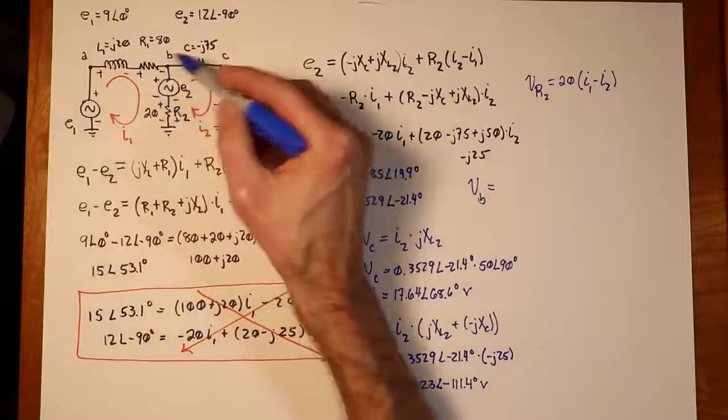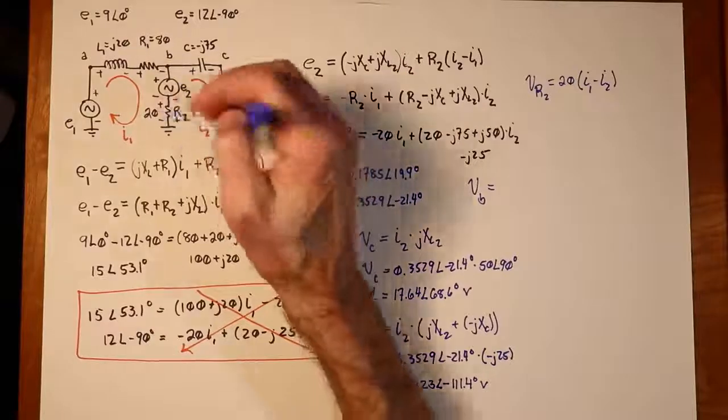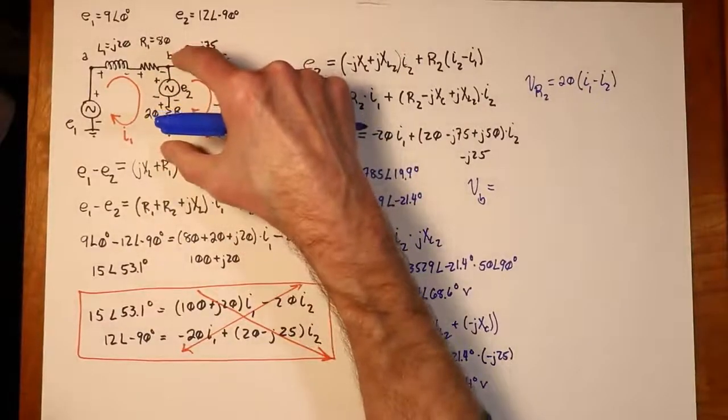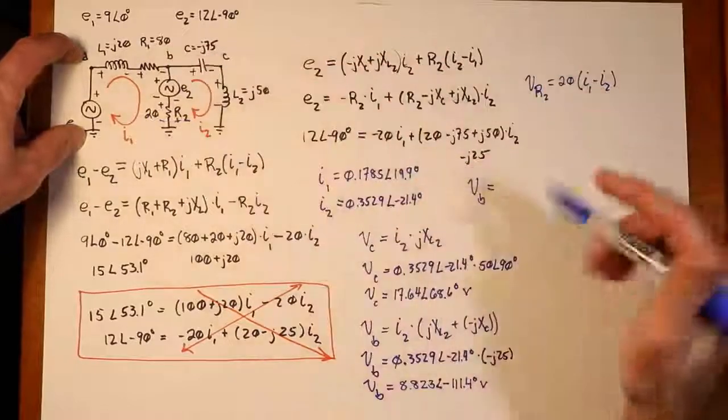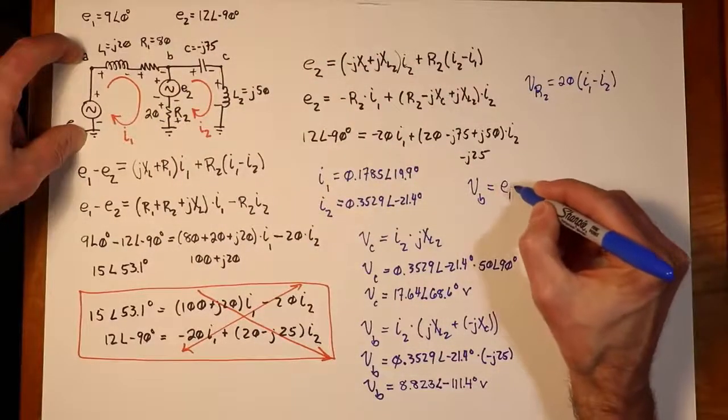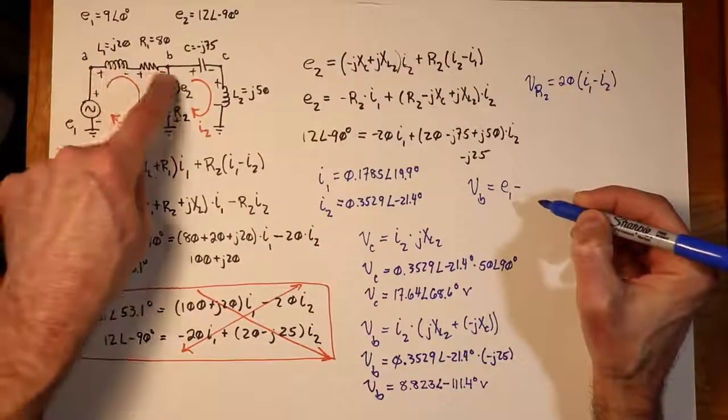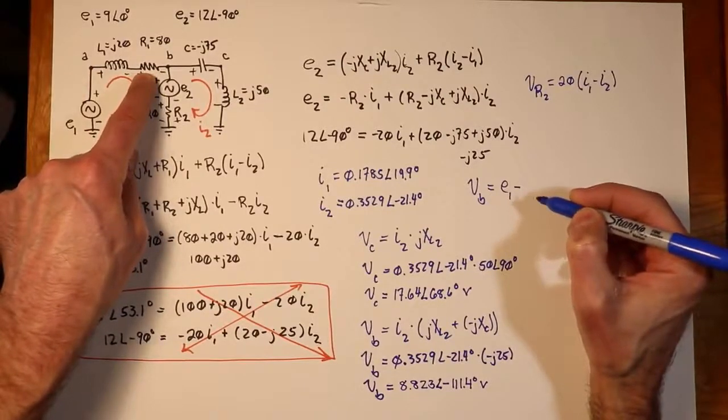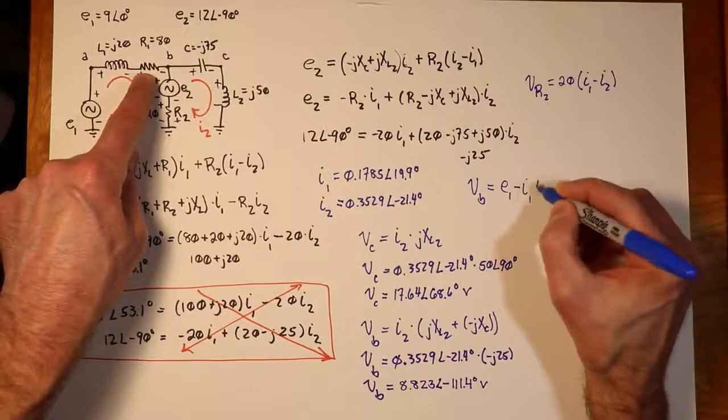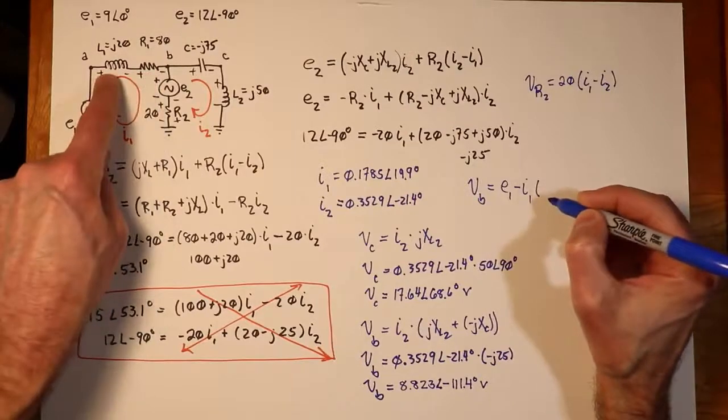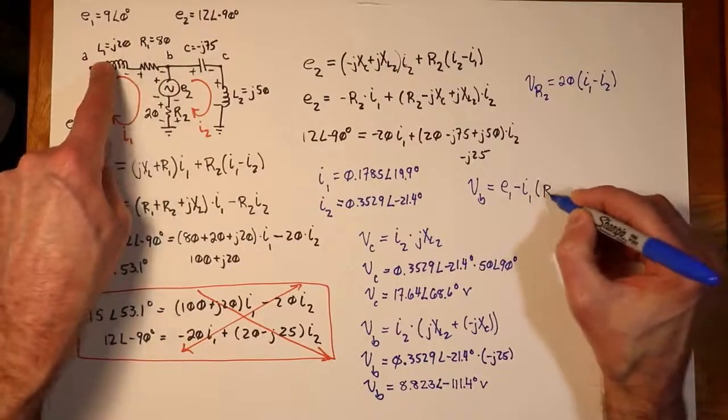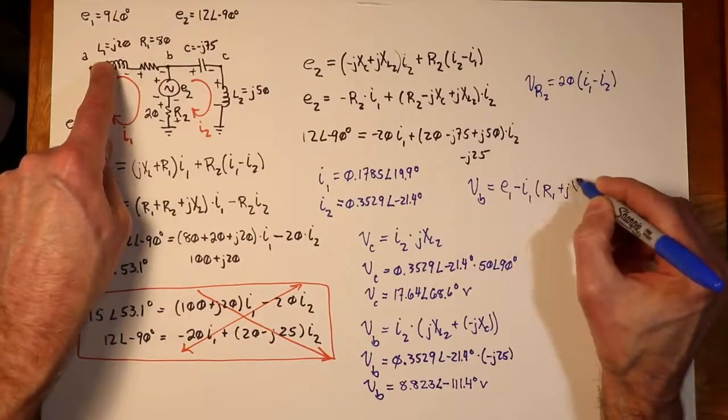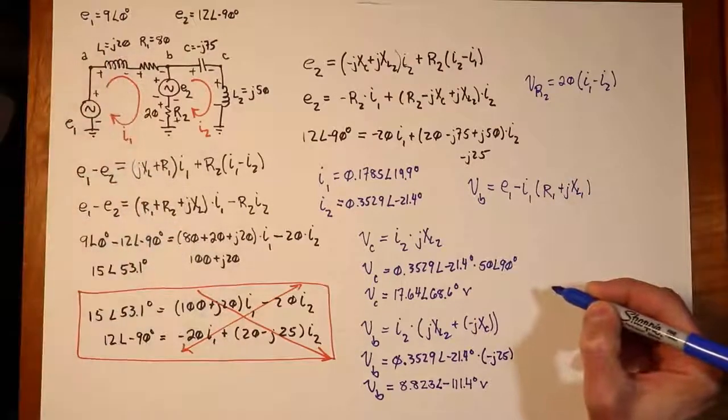What is Vb? Well, one way of looking at Vb, thinking of it in terms of Kvl, is you could say, well, that's E1 minus the drop on these two elements. So, in other words, it's I1 times the quantity R1 plus Jx of L1. You could do it that way.